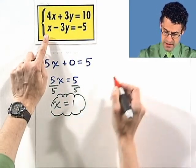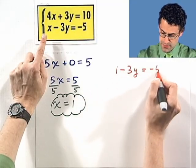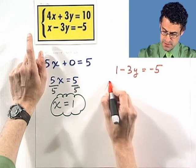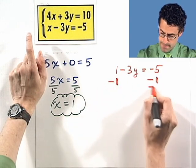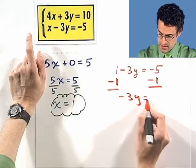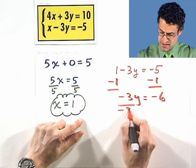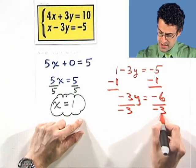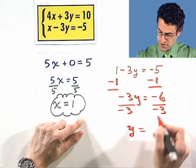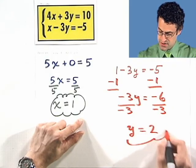I'm going to plug in a 1 for x, and I see 1 minus 3y equals negative 5. So, the first thing I'm going to do is subtract 1 from both sides. They drop out here. I'm left with negative 3y equals negative 6. I'm going to divide both sides by negative 3 to undo the multiplication. And I see y equals a negative divided by a negative is a positive. 6 divided by 3 is 2. And so, I see the answer is 2.